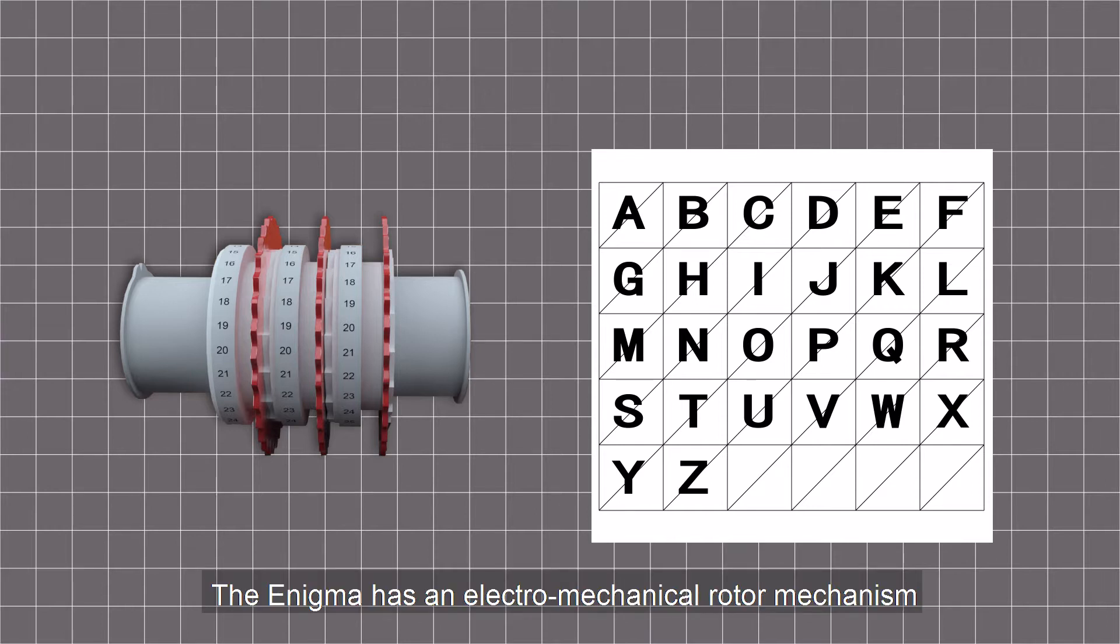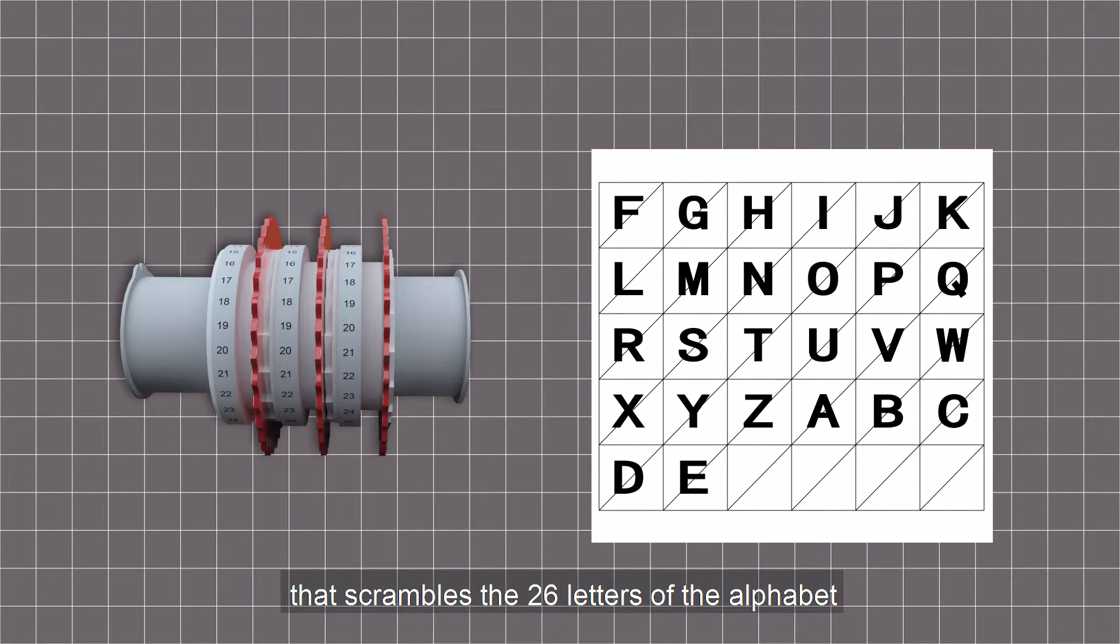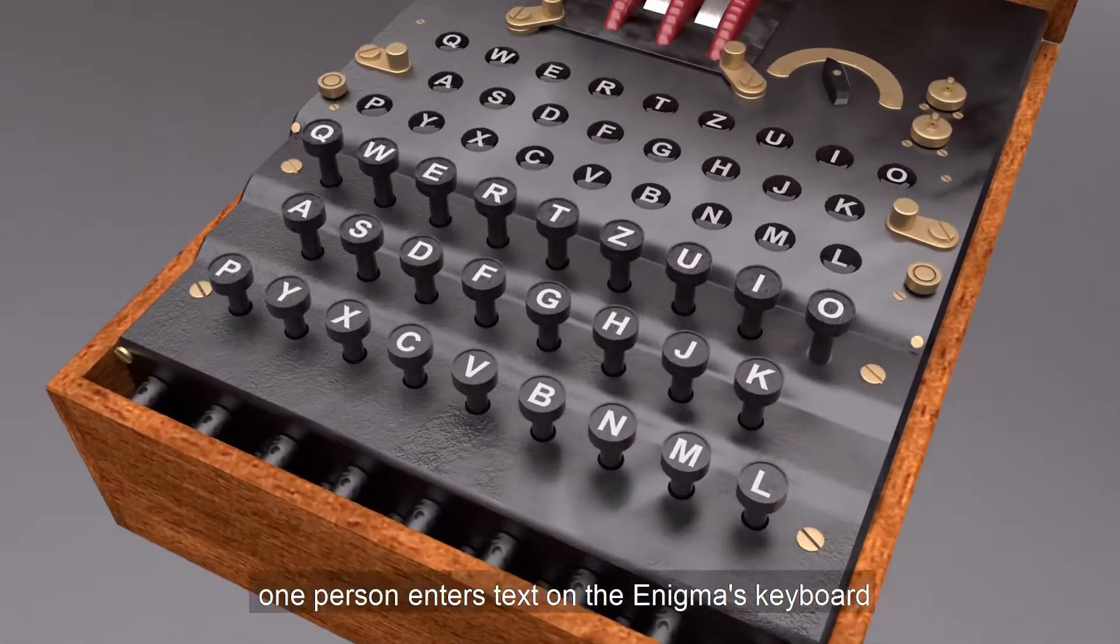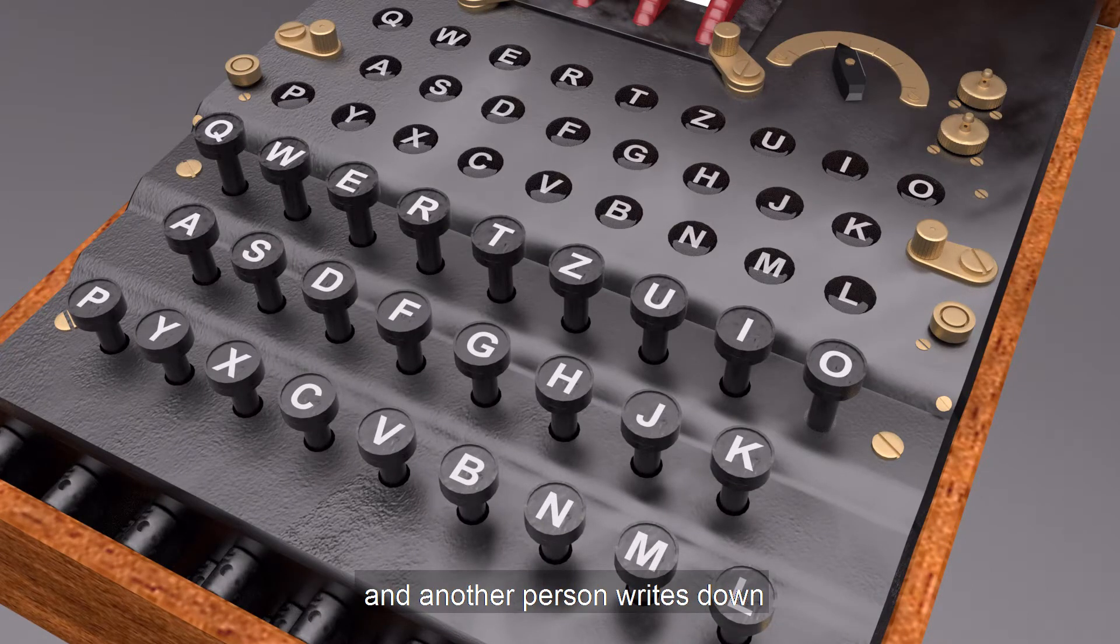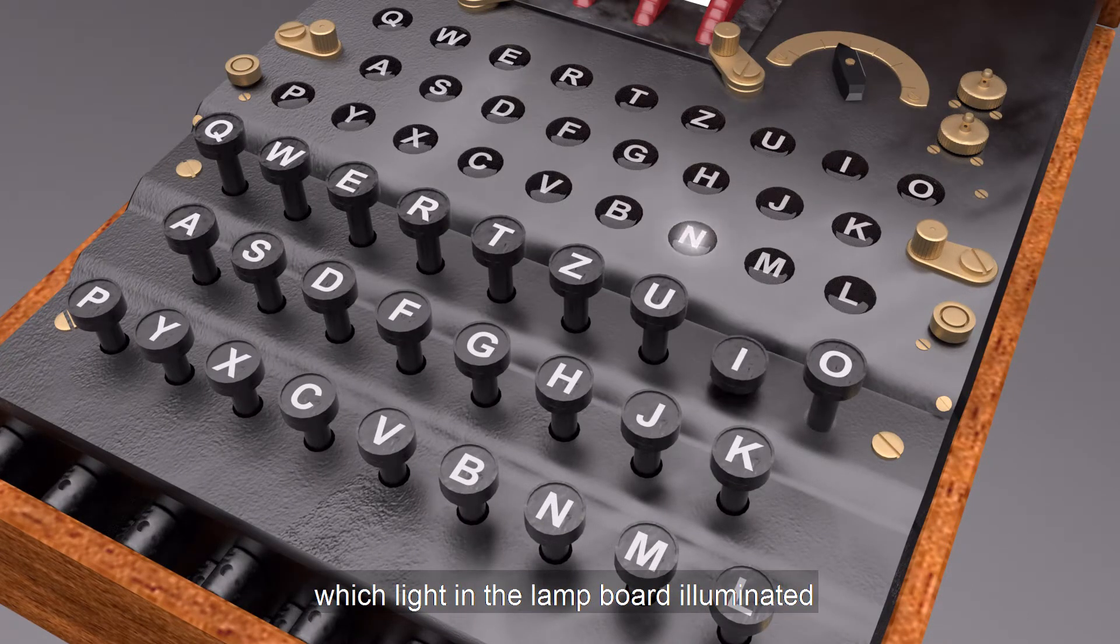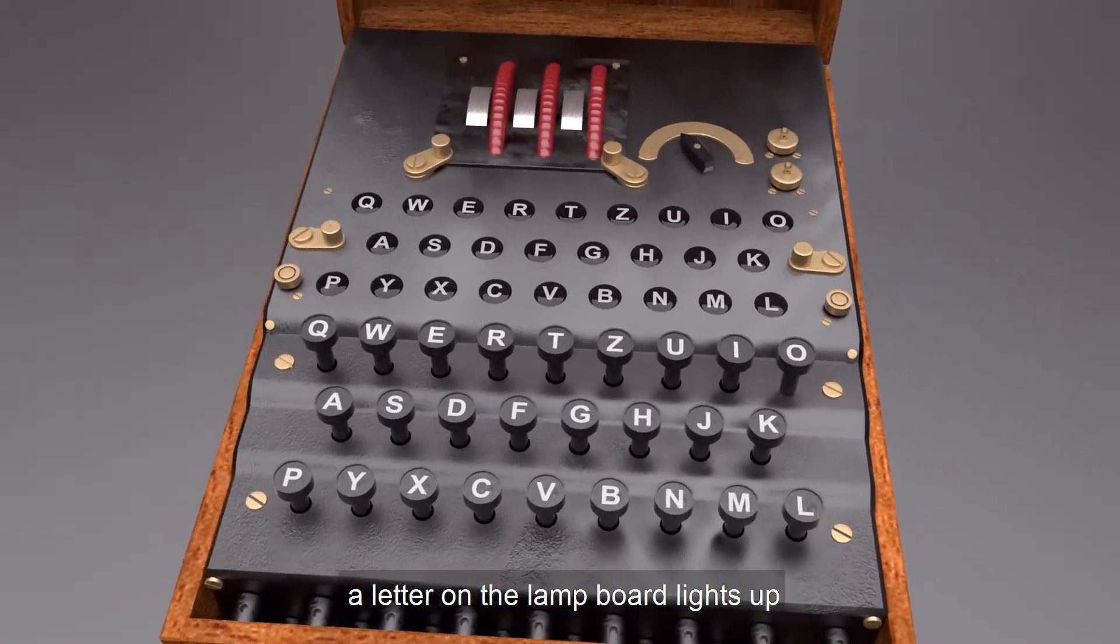The Enigma has an electromechanical rotor mechanism that scrambles the 26 letters of the alphabet. In typical use, one person enters text on the Enigma's keyboard and another person writes down which light in the lamp board illuminated. Each time you press a letter on the keyboard, a letter on the lamp board lights up.